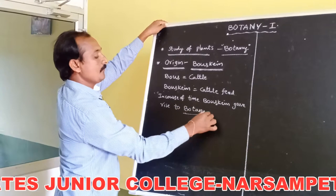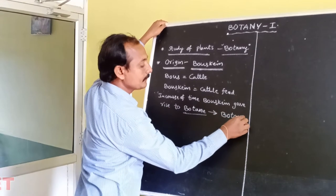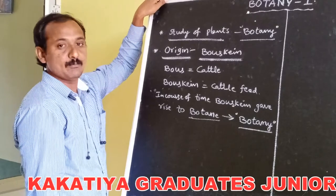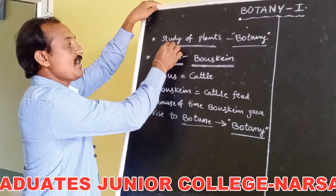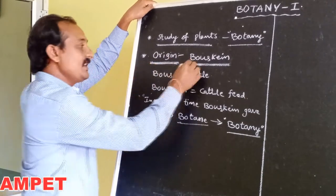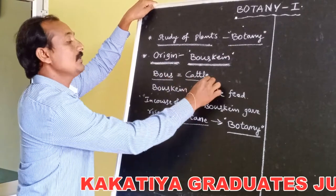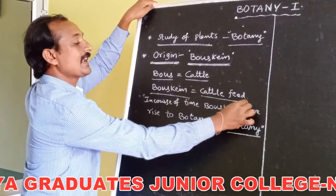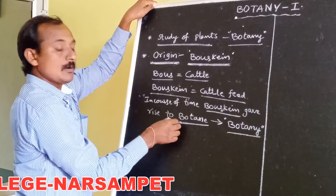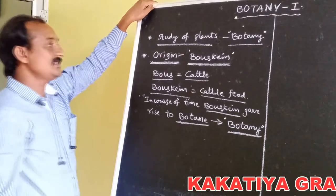And now we use the title Botany. This is the origin of Botany. Botany is a branch of biology; it deals with the study of plants. Botany is derived from a Greek word 'Bouskin' — 'Bous' refers to cattle and 'Bouskin' refers to cattle feed. In course of time, Bouskin gave rise to Botany.